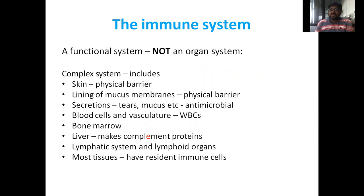What are the functions of the immune system? It is a functional system, not an organ system. This complex system includes skin as a physical barrier, lining of mucous membranes as a physical barrier, secretions of tears and mucus as antimicrobial agents, blood cells and vasculature including WBCs, bone marrow, liver, complement proteins, and the lymphatic system and lymphoid organs. Most tissues have resident immune cells that help with immunity.